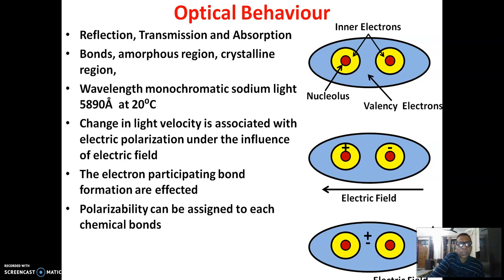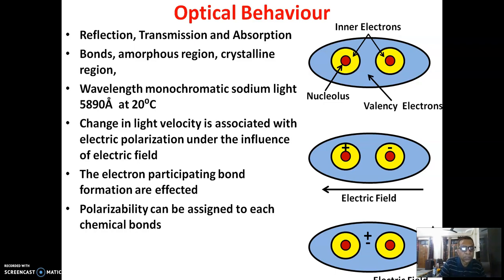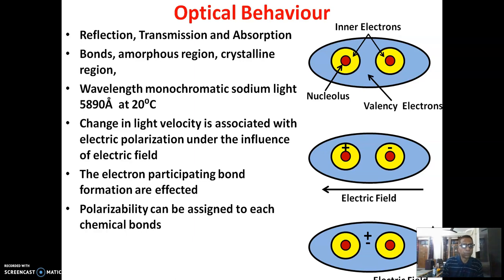The change in light velocity is basically associated with electrical polarization under the influence of an electric field. The electrons participating in bond formation are also affected by the presence of this electromagnetic field created by light. The polarizability can be assigned to each chemical bond.